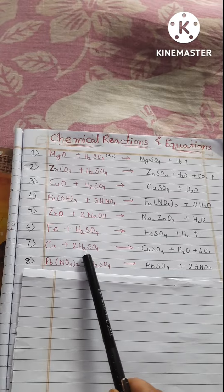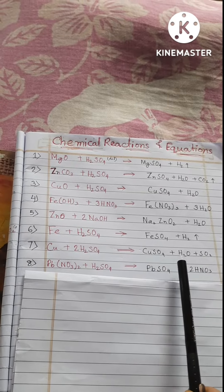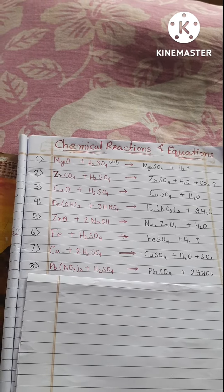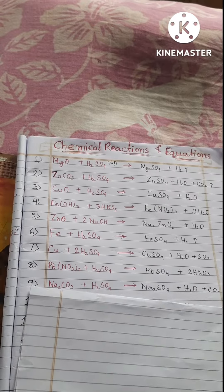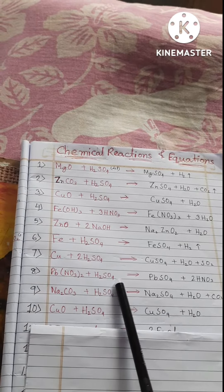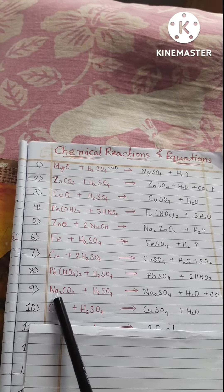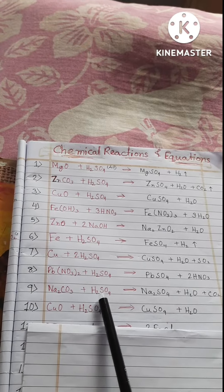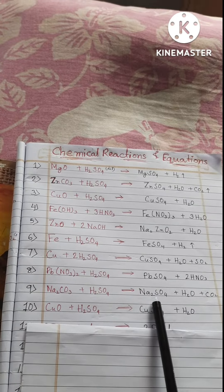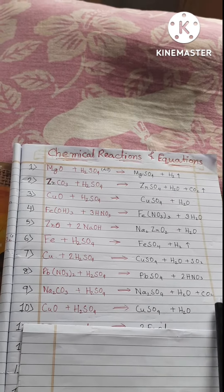Cu plus 2H2SO4 equals CuSO4 plus H2O plus SO2. Pb(NO3)2 plus H2SO4 equals PbSO4 plus 2HNO3. Na2CO3 plus H2SO4 equals Na2SO4 plus H2O plus CO2.